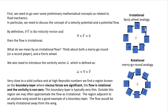To understand irrotational flow, think about a ferris wheel analogy. You're sitting on the ferris wheel going around and around, but the box always stays vertical — that black line always stays horizontal. The particle isn't rotating. In contrast, the merry-go-round analogy shows a particle that is rotating as it goes around, like something sitting on top of a record player. That's a rotational particle.